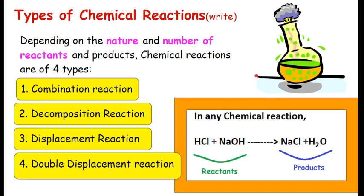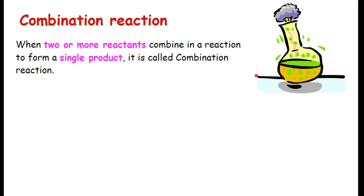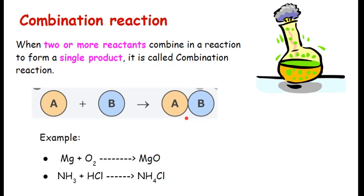We are going to take up one of them, one by one we will study all. Let's start with the first one which is the combination reaction. From the name itself you can understand, something is combining, something is joining. So, it says when two or more reactants combine in a reaction to form a single product, it is a combination reaction. Meaning, two things are joining to give you one thing. Over here, A and B are combining. Here there will be two, but product will be only one. Let's see some of the examples. Mg plus O2. See, two reactants are combining to give you only one thing, MgO. NH3 and HCl, two reactants combine to give you one product, NH4Cl. So, when two or more reactants combine to give you a single product, that is a combination reaction. I hope you are writing as they come here.